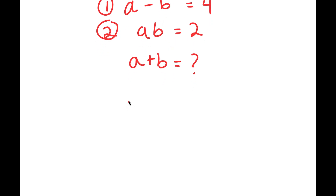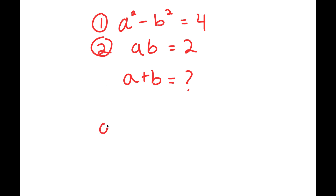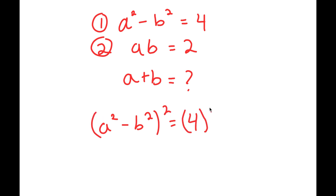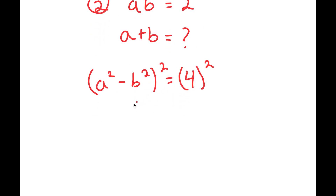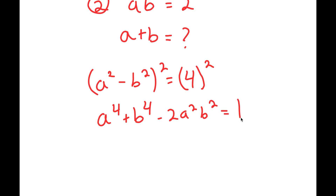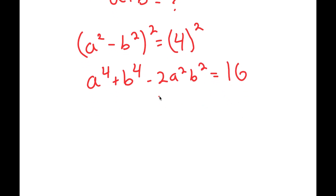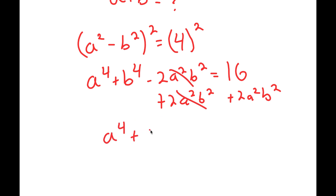To solve this, I'm going to use equation 1: a squared minus b squared is equal to 4. I'm going to square both sides, so I have (a squared minus b squared) squared equals 4 squared. This expands to a to the fourth plus b to the fourth minus 2a squared b squared equals 16. Adding 2a squared b squared to both sides, those terms cancel, giving a to the fourth plus b to the fourth equals 16 plus 2a squared b squared.